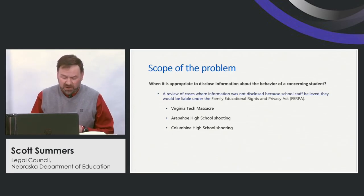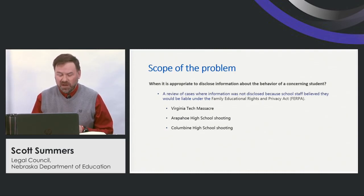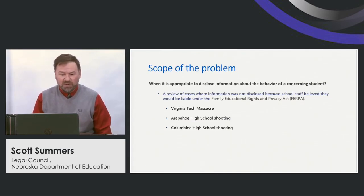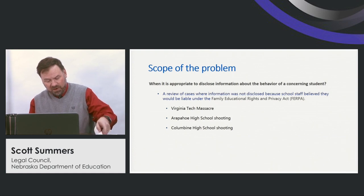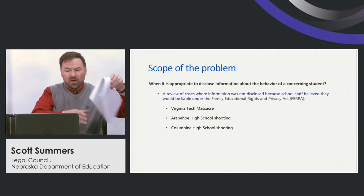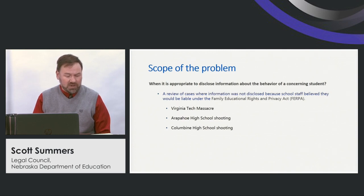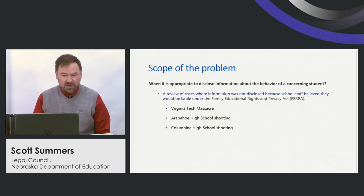The question of when it's appropriate to disclose information about the behavior of a student that an educator might deem concerning begins with a look back at some unfortunate events this country has experienced over the last couple of decades. We've noted three of the more prominent ones: Virginia Tech, Arapaho High School, and of course the Columbine shooting in Colorado.